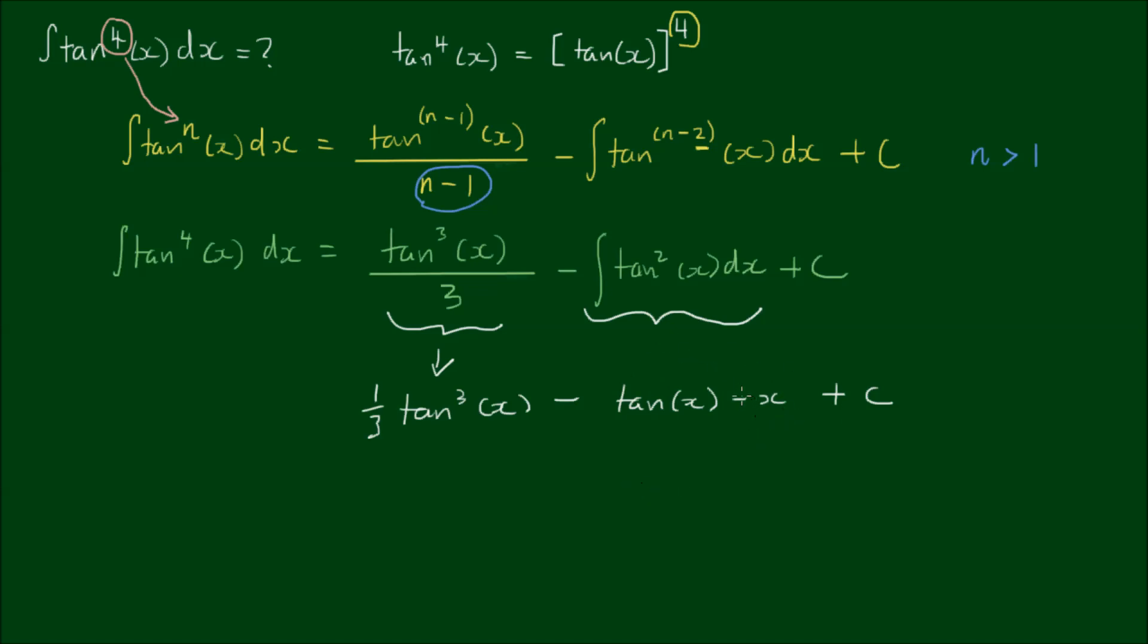which means this sign here in front of the x becomes a positive rather than a negative. So the minus becomes a plus. And therefore the resultant integral is the integral of tan to the fourth power of x dx is equal to 1/3 by tan cubed of x minus tan of x plus x plus c.